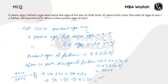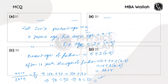Now let us check our options. According to our options, the correct choice will be option B. I hope you have understood all the concepts. Thanks for watching.